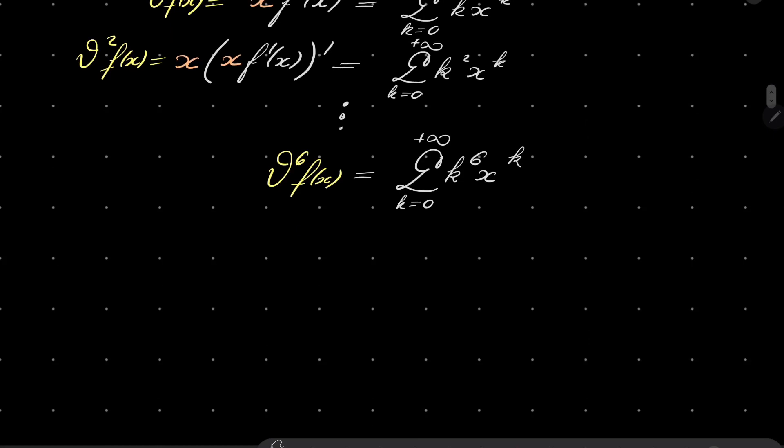And now notice that we just want to evaluate this at one half. So all we want to find is theta evaluated at one half because that is exactly equal to series k to the power of 6 over 2 to the power of k.